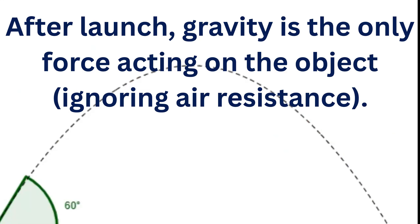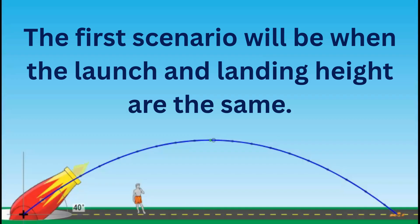This produces a parabolic trajectory. Unless the object was launched vertically, we will examine three separate scenarios.